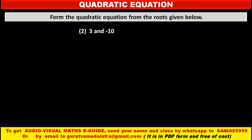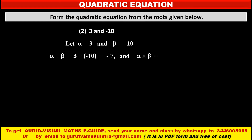Now, the second pair of roots is given: 3 and minus 10. Let alpha equal 3 and beta equal minus 10, where alpha and beta are symbols for the roots of the equation. Sum of the roots, alpha plus beta, equals 3 plus minus 10, that is 3 minus 10, which is equal to minus 7. Product of the roots, alpha into beta, equals 3 into minus 10, which is equal to minus 30.